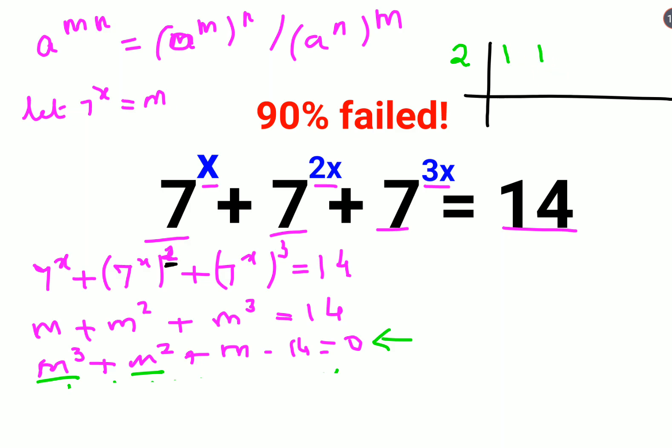m square coefficient which is also 1, m coefficient which is also 1 and then lastly the constant which is 14. So let's do the synthetic division.